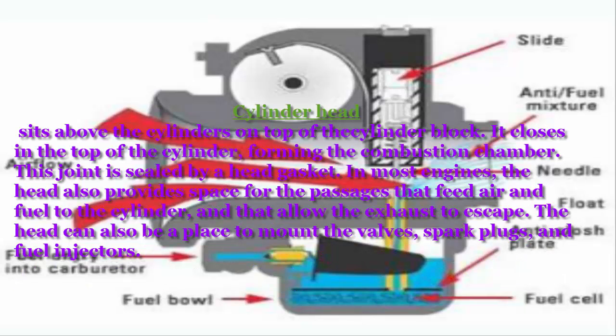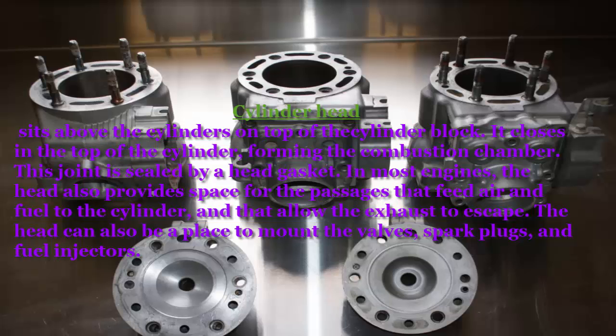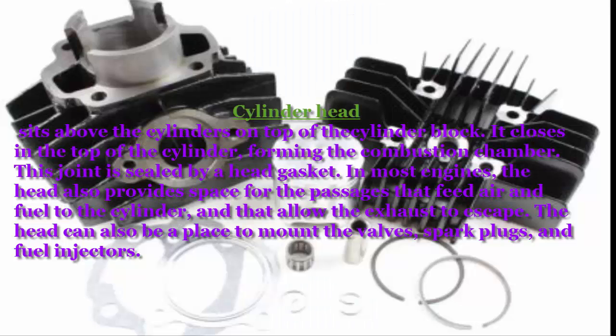Cylinder Head: The cylinder head sits above the cylinders on top of the cylinder block. It closes in the top of the cylinder, forming the combustion chamber. This joint is sealed by a head gasket. In most engines, the head also provides space for the passages that feed air and fuel to the cylinder and allow the exhaust to escape. The head can also be a place to mount the valves, spark plugs, and fuel injectors.